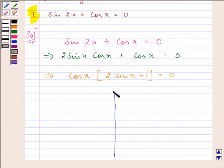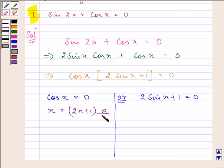the two different values of x where first of all cos x is equal to 0 or 2 sin x plus 1 is equal to 0. On simplifying, we have x over here as 2n plus 1 pi by 2